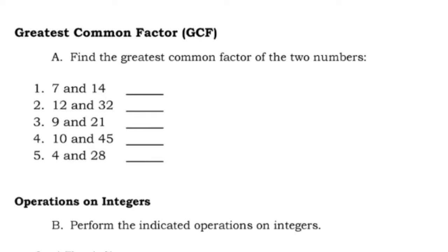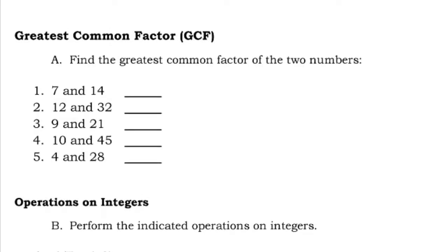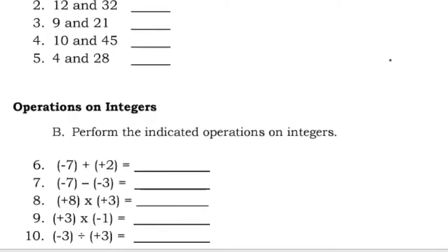The GCF is the greatest number that can divide both numbers. For example, 7 and 14 — the GCF here is 14, since 14 can divide 7 and also divide 14 itself. Then, review operations on integers: perform the indicated operations on integers, where there are five numbers.